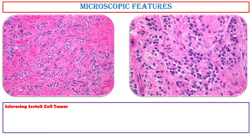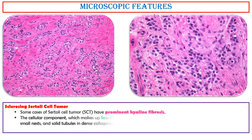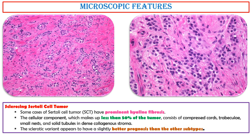Sclerosing Sertoli cell tumor: Some cases have prominent hyaline fibrosis. The cellular component, which makes up less than 50% of the tumor, consists of compressed cords, trabeculae, small nests, and solid tubules in dense collagenous stroma. The sclerotic variant appears to have a slightly better prognosis than the other subtypes.